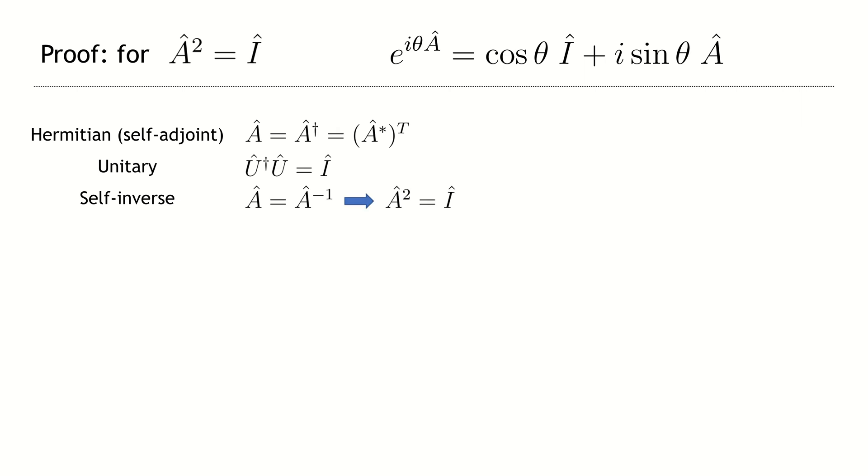The product of the operator on the inverse operator is equal to the unit matrix. This property is possessed, for example, by all three Pauli and the Hadamard operators. And we will use this fact for the derivation of the above equation.